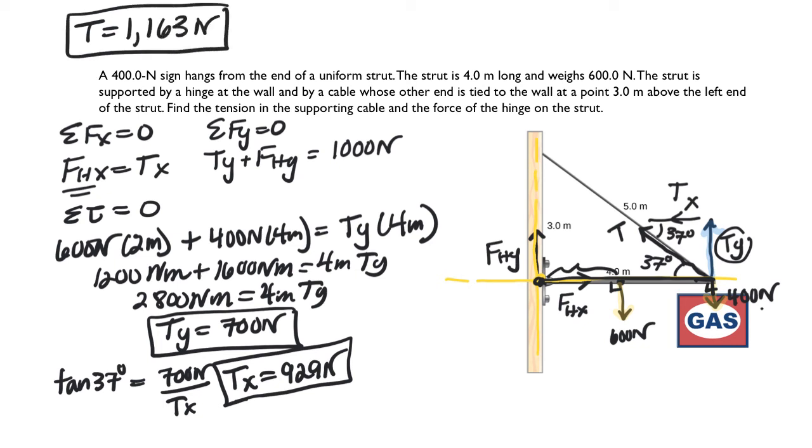So I've solved for that. Now I know FHX equals TX from up here. So 929 newtons. And then I could come over here, and I know that 700 newtons plus FHY is 1,000 newtons. That's going to tell me that FHY is 300 newtons.